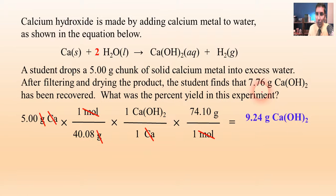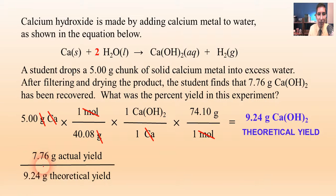Okay, now the actual yield was 7.76. So now we can figure out the percent yield. We just take the 7.76 divided by the 9.24, and of course multiply by 100. And when you key that in to your calculator, it looks like the percent yield is 84.0%.